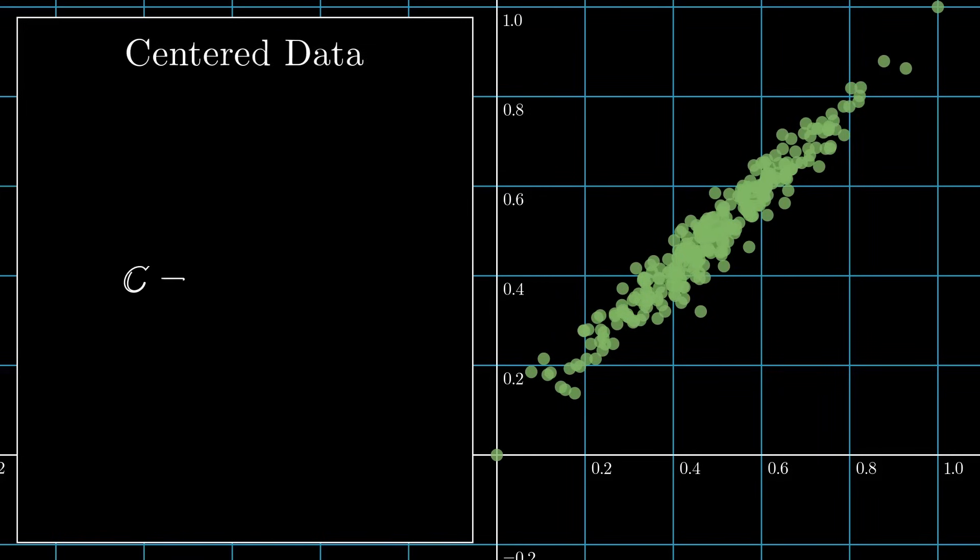Next, we multiply the transpose of our centered data by the centered data itself and then scale it by the number of samples. Since we are working with 2D data, we end up with this nice and simple 2 by 2 matrix, which is called the covariance matrix.